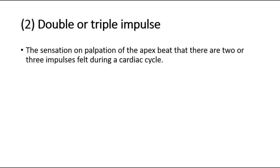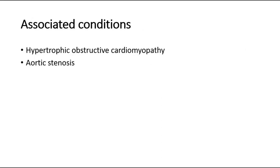The second abnormality is a double or triple impulse apex beat, which is the sensation on palpation of the apex beat that there are two or three impulses felt during a cardiac cycle. This is associated with hypertrophic obstructive cardiomyopathy and aortic stenosis.